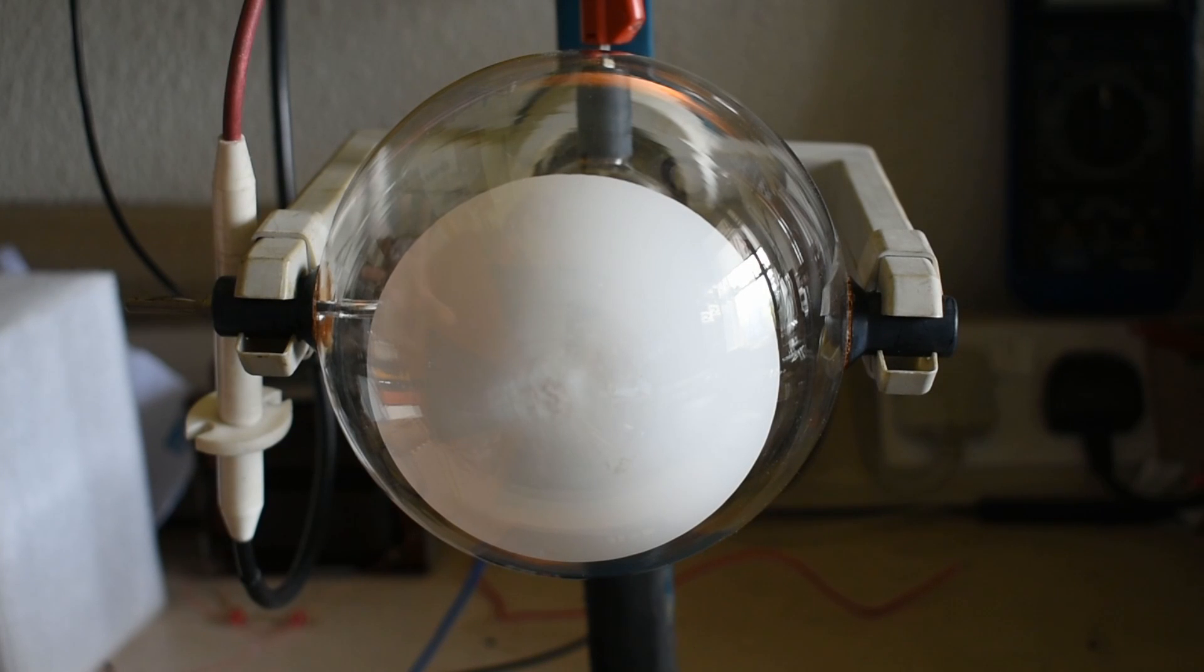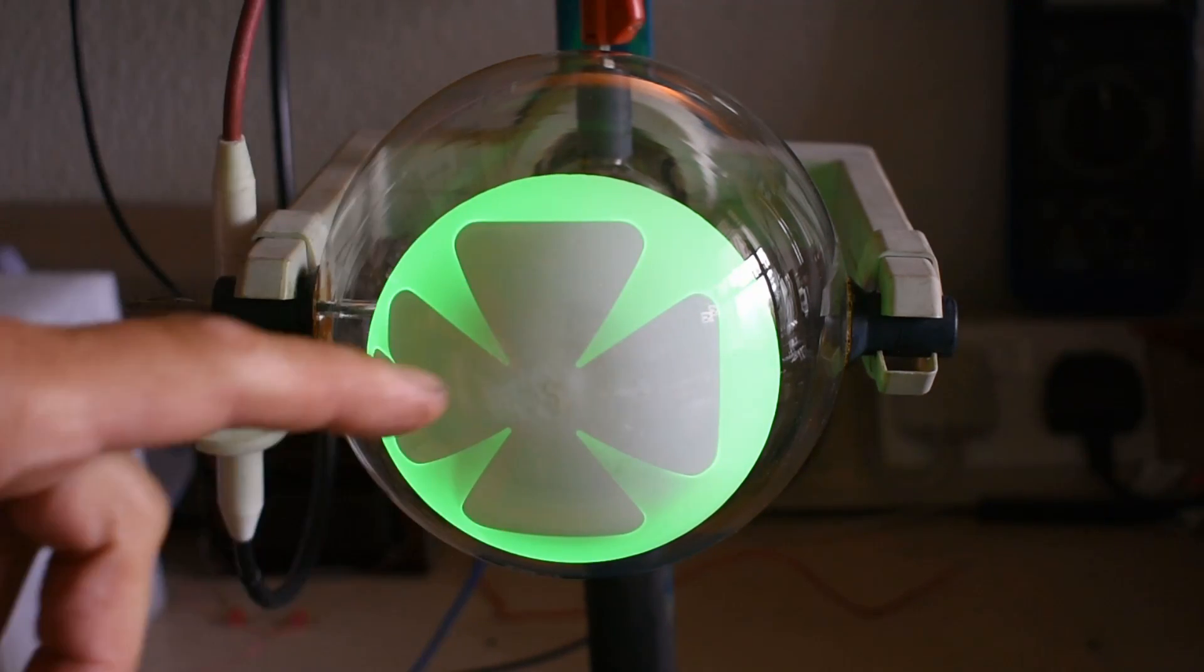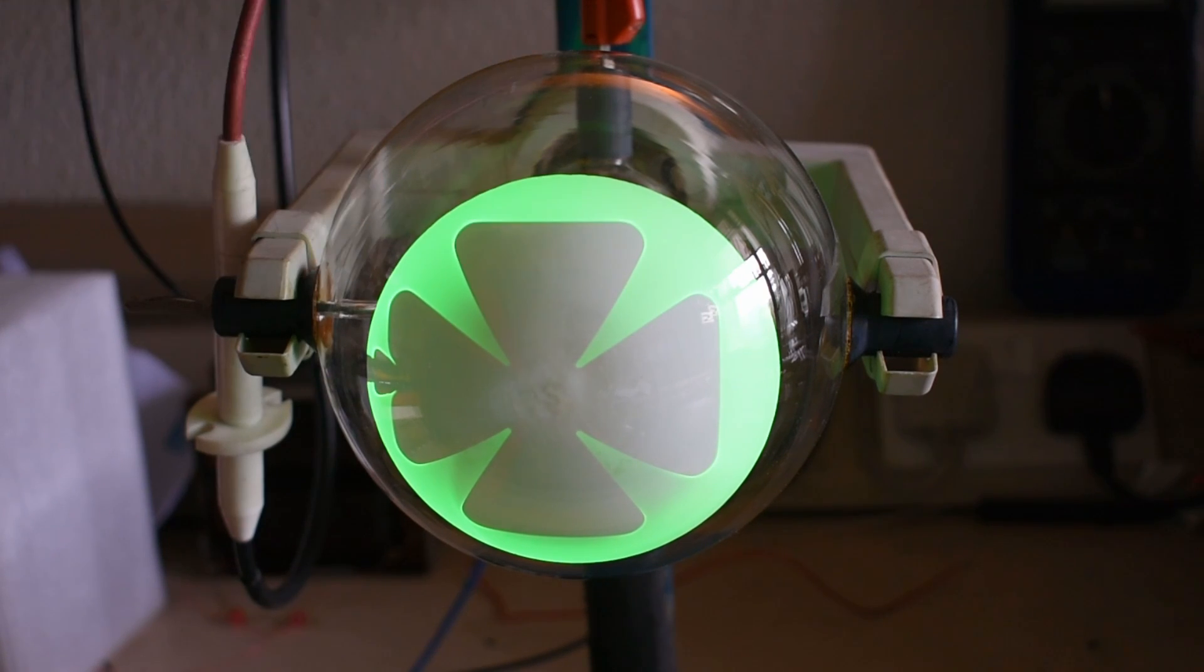Okay I've got the Maltese cross CRT connected up and the heater is on. I now need to apply a voltage onto the anode here which is about 2.5 kV. Notice the Maltese cross is distorted because there's a charge on the Maltese cross by the electrons hitting it.